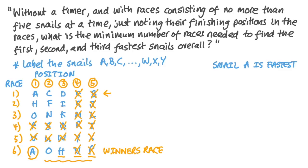What about snail H? It finished third in the winner's race. So at best, it could be the third fastest snail in the whole pack. So anything slower than H can't be considered for the top three. So that rules out F and I. Thinking about snail O, at best, it's the second fastest snail overall. Now, the contenders for third fastest snail must be H, which finished just behind it in the winner's race, and N, which finished just behind it in the original race. K, who finished two places behind it in the original race, can't possibly be the third fastest snail.